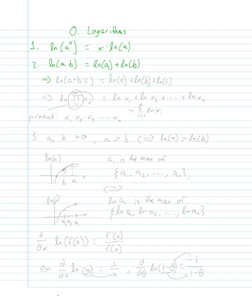This is even true for more than just a and b. For example, if we have natural log of a times b times c, it's equal to natural log of a plus natural log of b plus natural log of c.